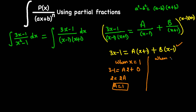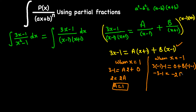When x equals negative 1: the left side gives 3(−1) minus 1 equals −4, the A term becomes 0, and we get B(−1 minus 1) equals −2B. So −4 equals −2B, and dividing both sides by −2 gives B equals 2.